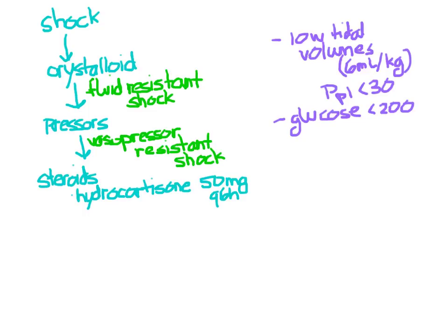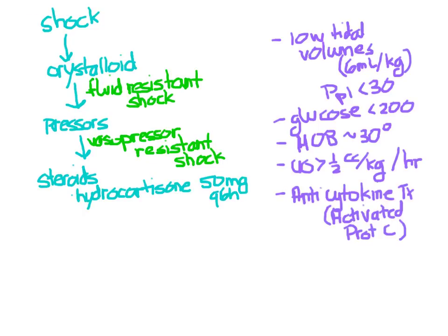Also, keep the head of bed around 30 degrees if you can, with the idea here being that we would prevent any aspiration. Also, let's try to keep the urine output more than half a cc per kilogram per hour. Obviously, the patient needs a Foley. This also gives us a good indicator for how well the patient is perfused and that the kidneys are still working. And it would be great to have some sort of anti-cytokine medication, but drug companies have looked for it and have not been able to find one that works. And so there is no such thing yet.